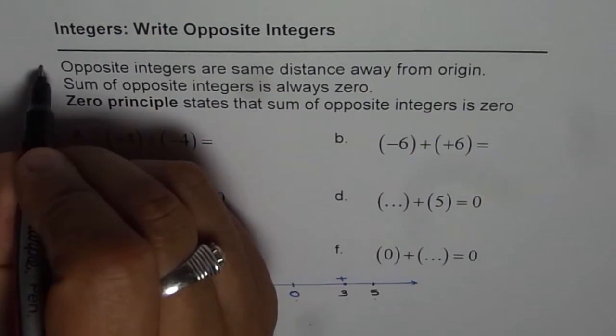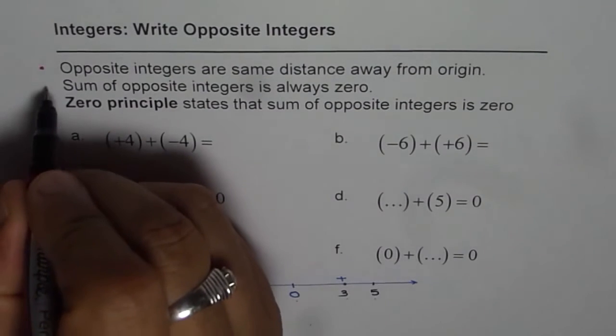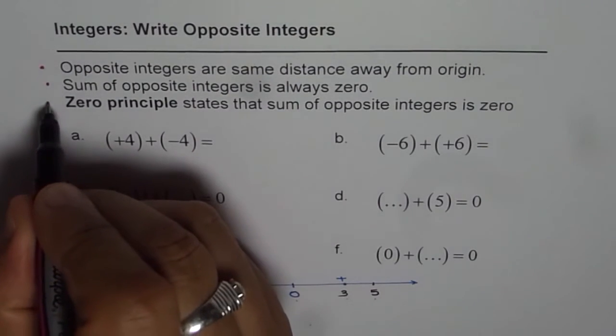Remember these three things about opposite integers. First, opposite integers are same distance away from origin. Second, sum of opposite integers is always 0. And that is what we call 0 principle.